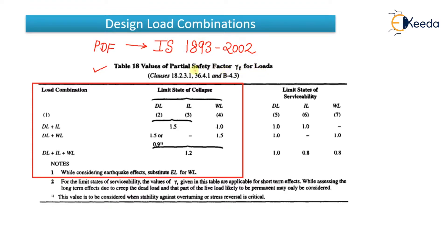This concept of the partial safety factor was explained in the previous video. You have to multiply the load with a certain factor to increase it and then use the combinations. The first type of combination is dead load plus live load, multiplied by a 1.5 factor — so it will be 1.5 times dead load plus 1.5 times IL.